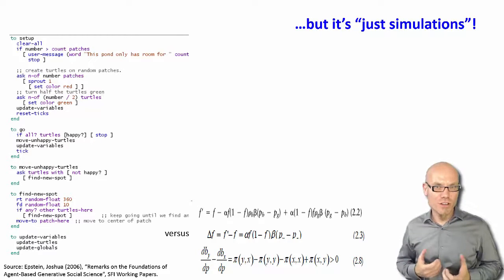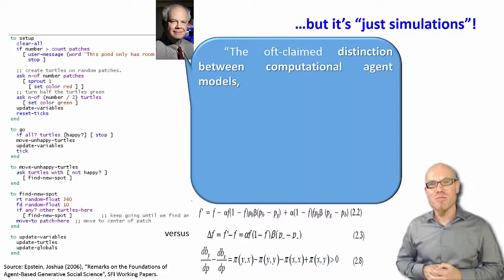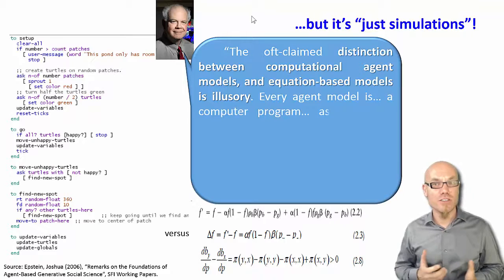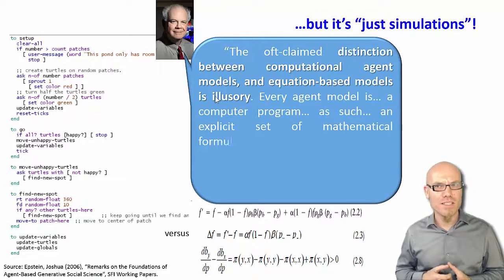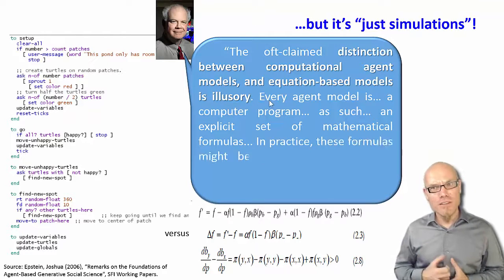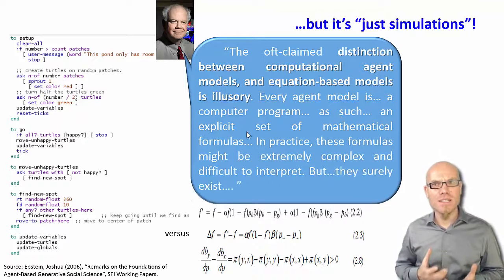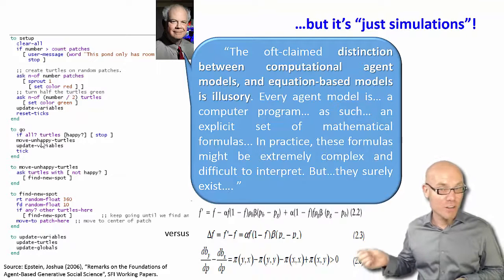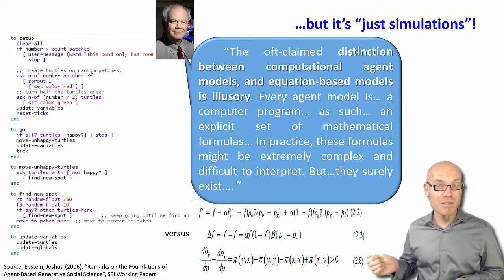To say it with the words of Josh Epstein, one of the pioneers of agent-based modeling in the social sciences, he said they often claim distinction between computer agent models and equation-based models is illusory. Every agent model is a computer program and as such an explicit set of mathematical formulas. That's what you see here. So these codes, these are the mathematical formulas.